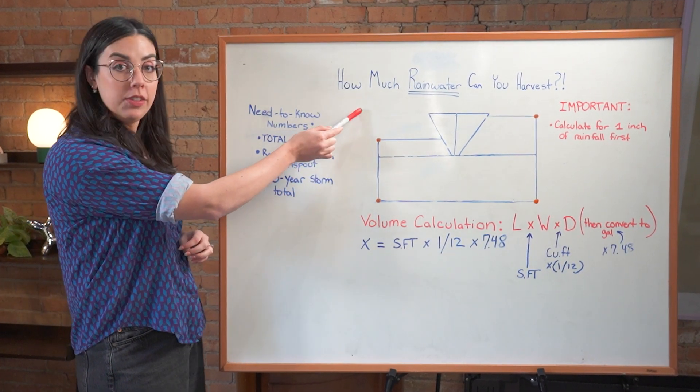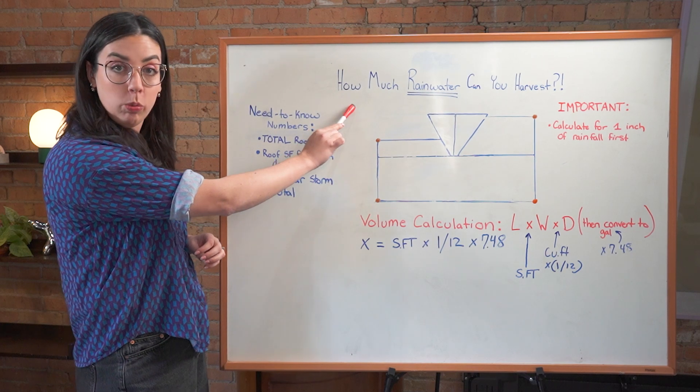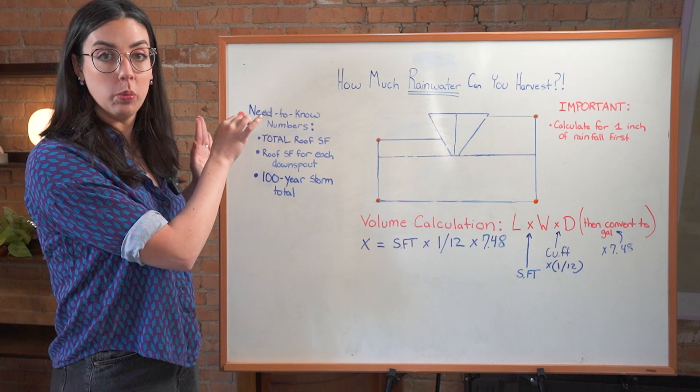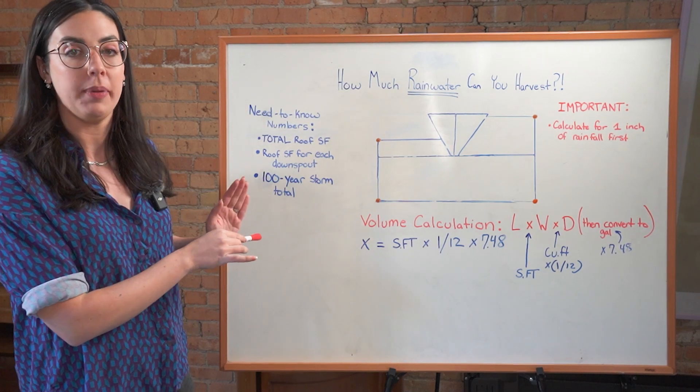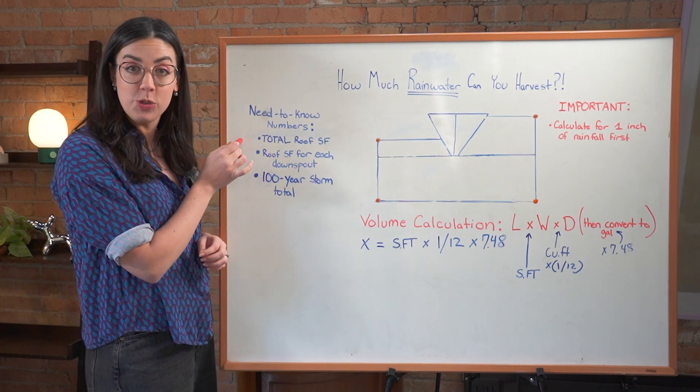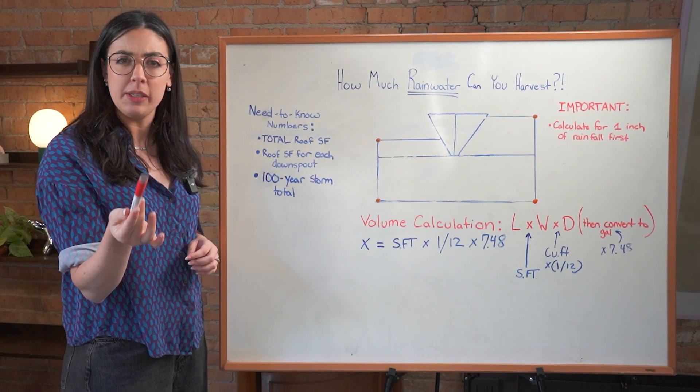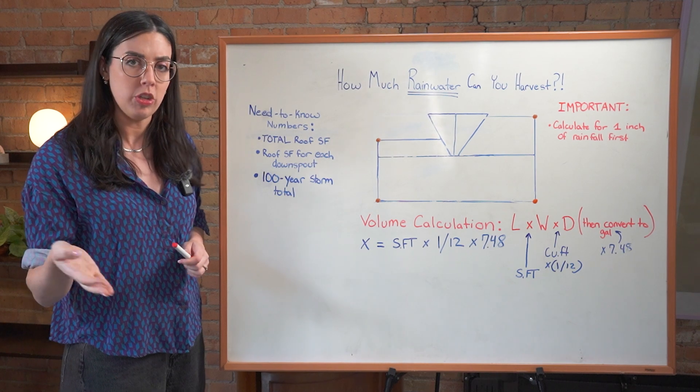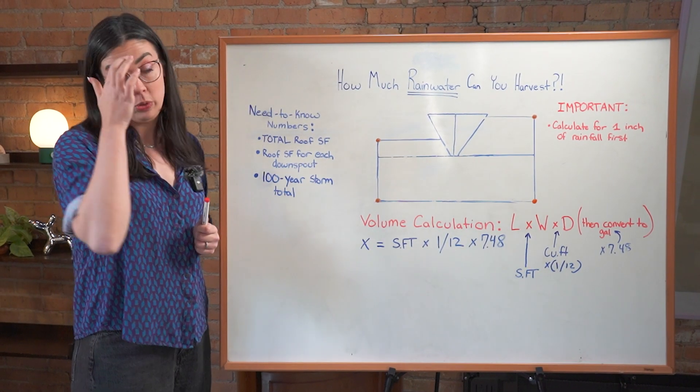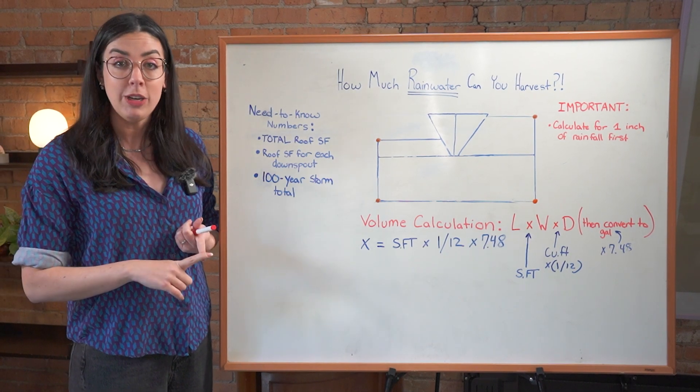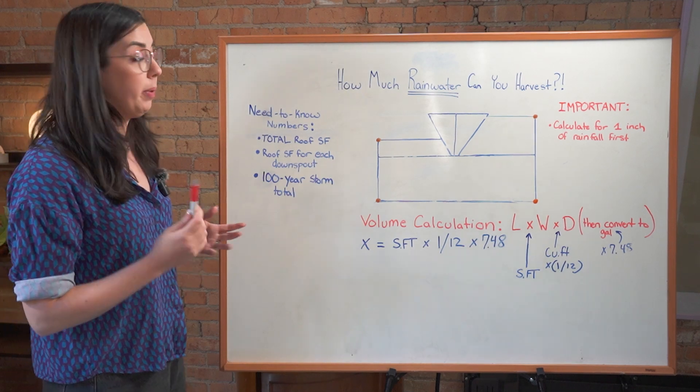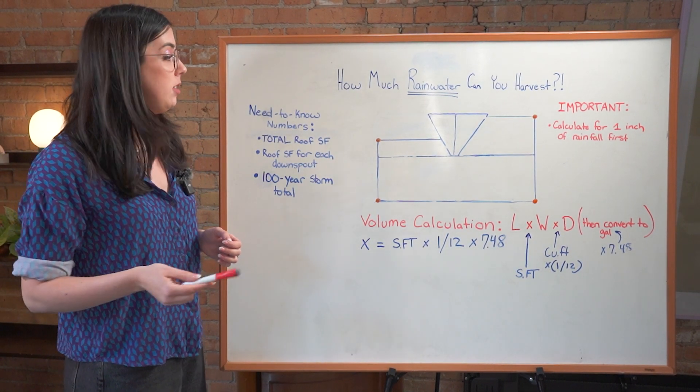So how much rainwater can you harvest? This will all depend on the size of your roof. What I want to walk you through first is some need-to-know numbers that I want you to collect before we get started so you're not working with hypotheticals. Your total roof square footage. If you don't know what this is, you can go on Google Earth. There's a measuring tool. I think even Google Maps has a measure distance button when you right-click on the browser version, but I typically use Google Earth Pro, and then you'll make a polygon and calculate the total square footage of your roof.